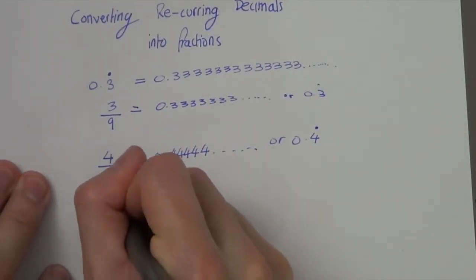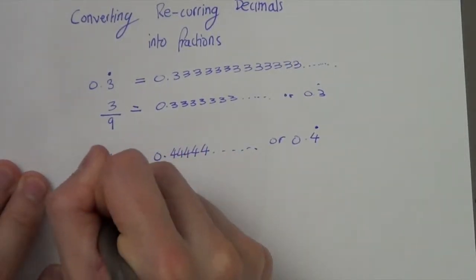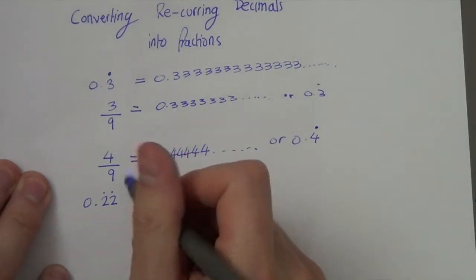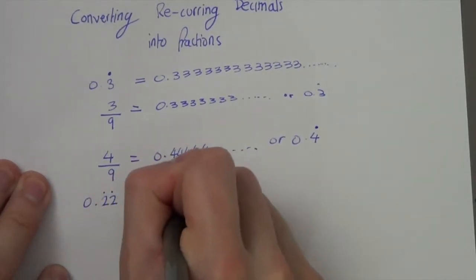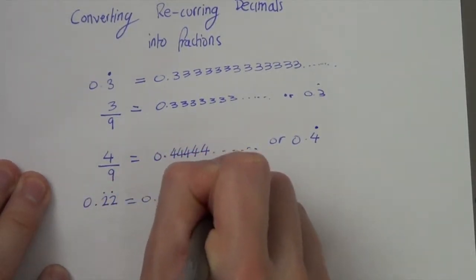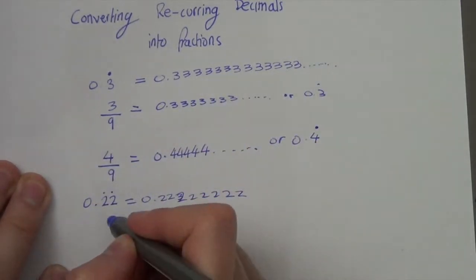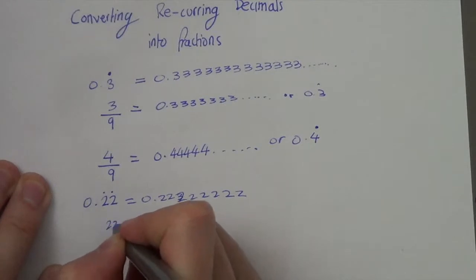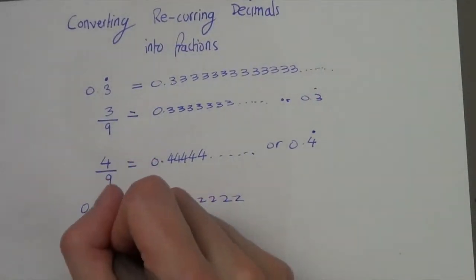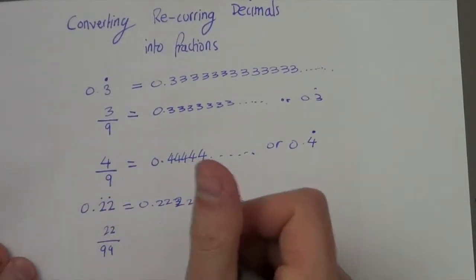Now if we extend the idea, let's say I've got 2 numbers like that. So this is 0.22. This then becomes 22 over 99 as a fraction.